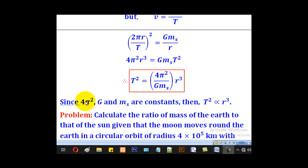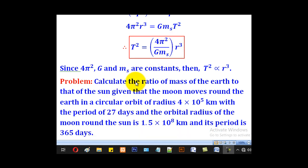From there you realize that 4π squared and GmS are all constants. Therefore, T squared is proportional to r cubed. That is Newton's consistency with Kepler's third law. We shall use that to go through this problem.